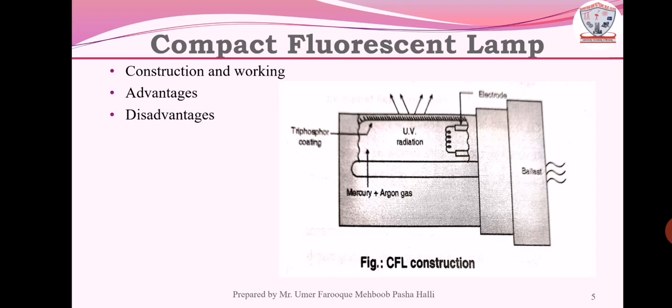Now, compact fluorescent lamp, that is CFL. Nowadays, the CFL lamp is mostly used in every domestic line. In this section, we are discussing the construction and working, advantages, and disadvantages. The figure shows the simple construction of CFL. The construction consists of a gas-filled tube with two electrodes mounted in a one-end cap. It contains low-pressure mix of argon gas and mercury vapor, and the inside is coated with three different phosphors.